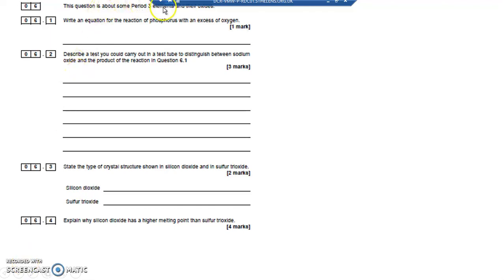Question 6 is about some period 3 elements and their oxides. Write an equation for the reaction of phosphorus with an excess of oxygen. Well, you need to know that phosphorus is P4 and P4O10 is phosphorus oxide.